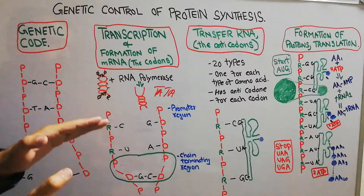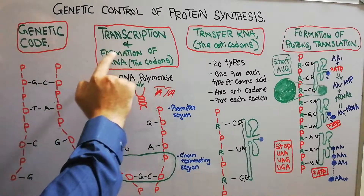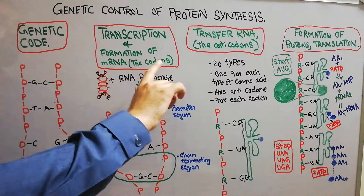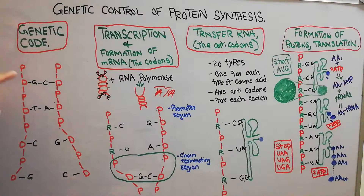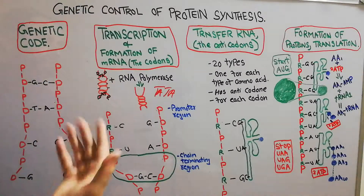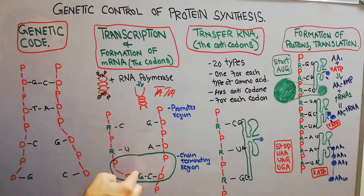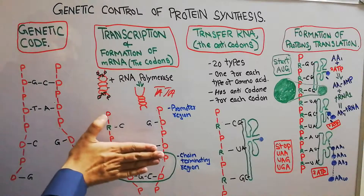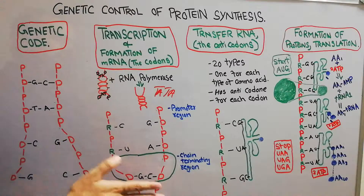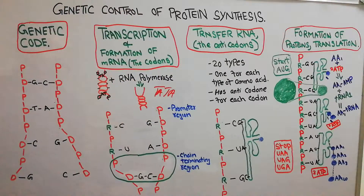This process is known as transcription — the formation of messenger RNA. The specific triplets or combination of nitrogenous bases in the DNA are known as genetic codes, but when copied onto a messenger RNA these combinations of three specific bases are known as codons. The RNA polymerase moves along, opening up the DNA and forming the messenger RNA. This entire story so far takes place inside the nucleus.